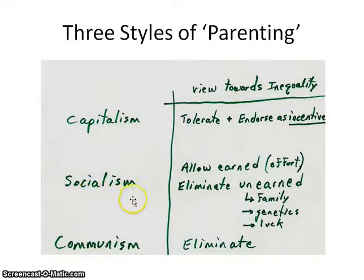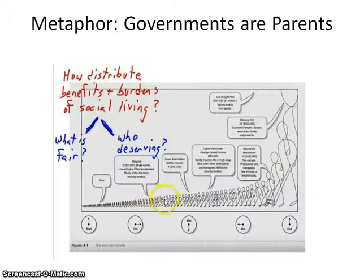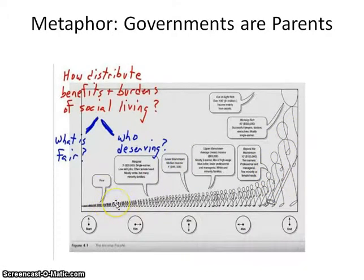The socialist will depart from the capitalist in the following way. While they might allow earned inequalities — inequalities as a result of effort — the socialist tends to want to eliminate unearned inequalities: inequalities caused by family birth position, genetics, or luck. The socialist may tolerate inequality to the extent that differences in income or status or power are the result of actual effort and hard work. But suppose you're born into a family with a lot of resources and income — that gives you a leg up. You are getting all kinds of resources that children lower down are not getting. Just position of birth in this spectrum, for the socialist, is a problem.